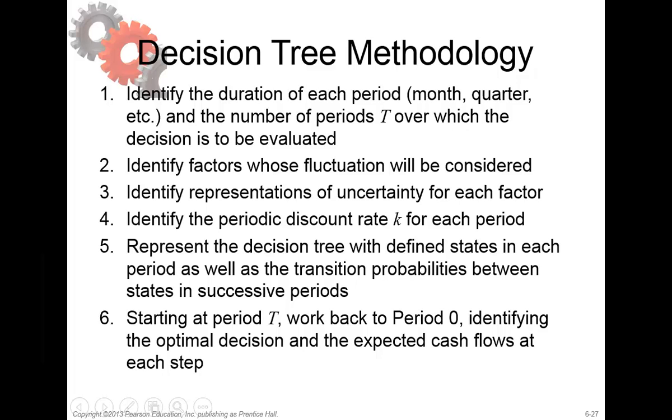When you want to use the decision tree methodology, you need these six variables. Decision trees will need at least three variables, and those start with the periods and the fluctuation in those factors, representation of the discount rate for the present value, and you have to work back to period number 0.